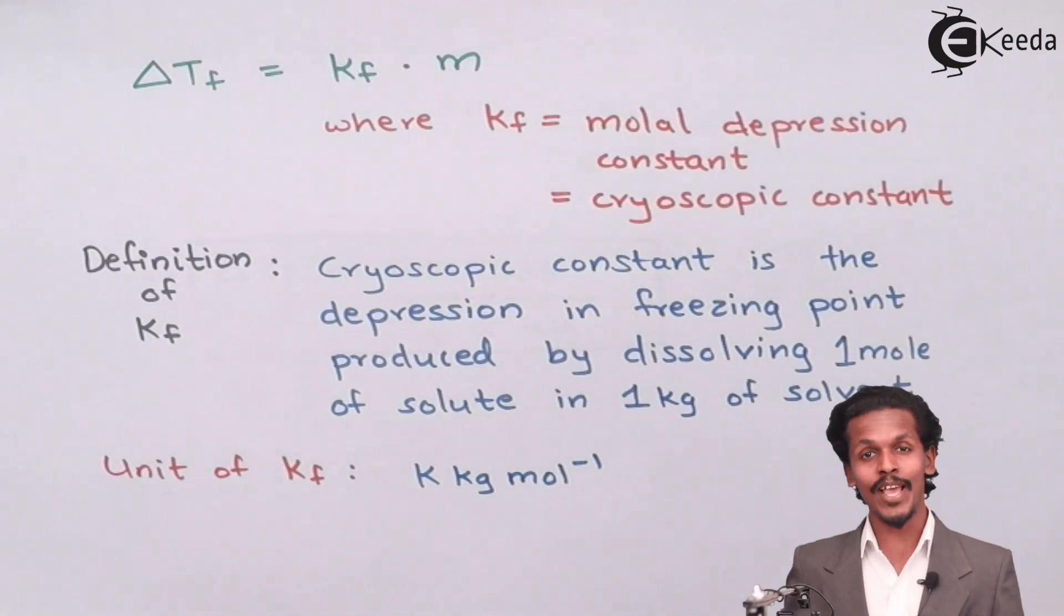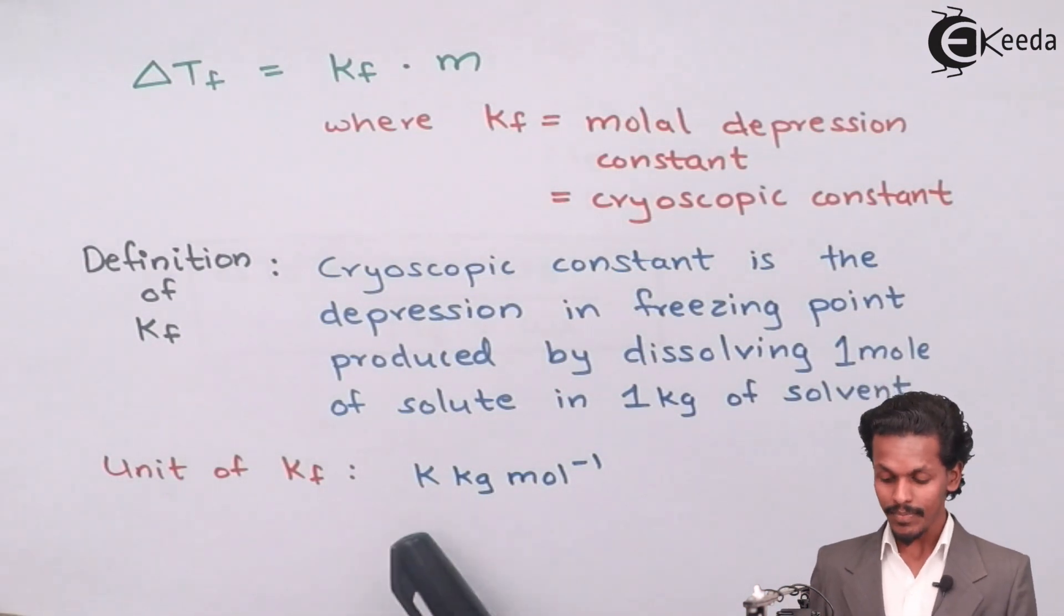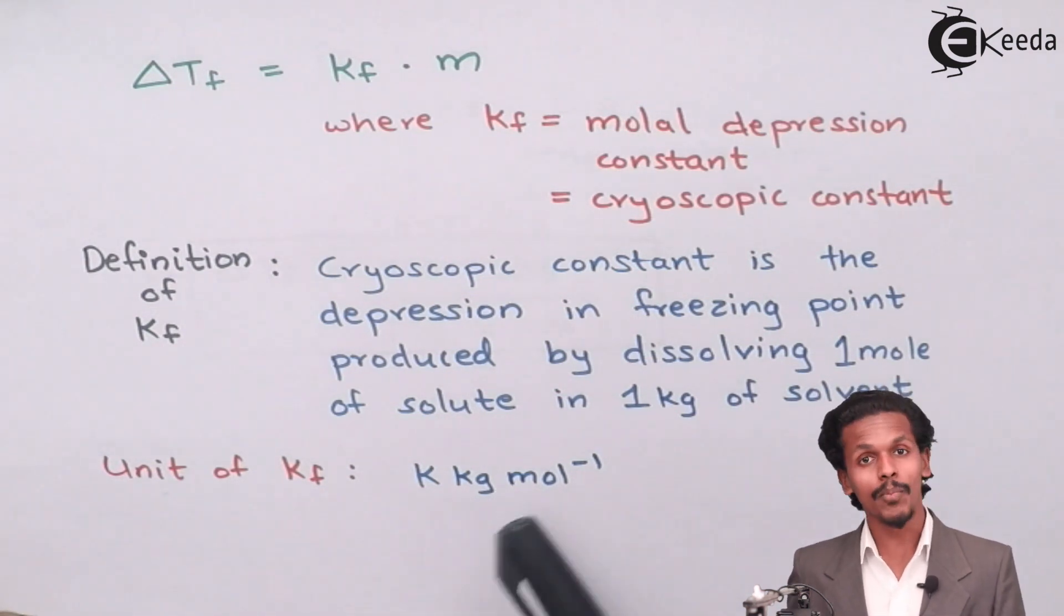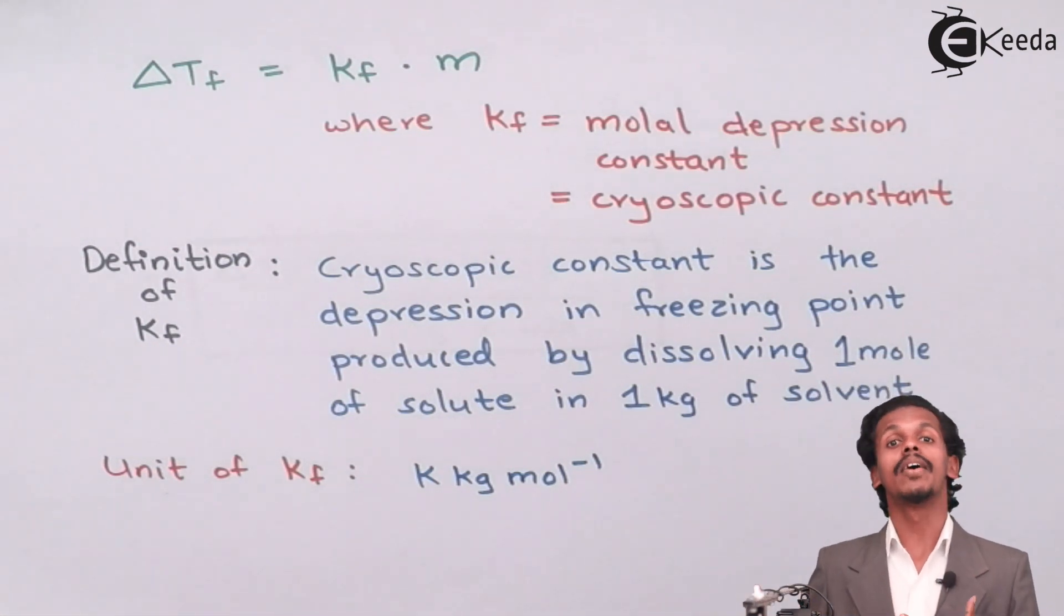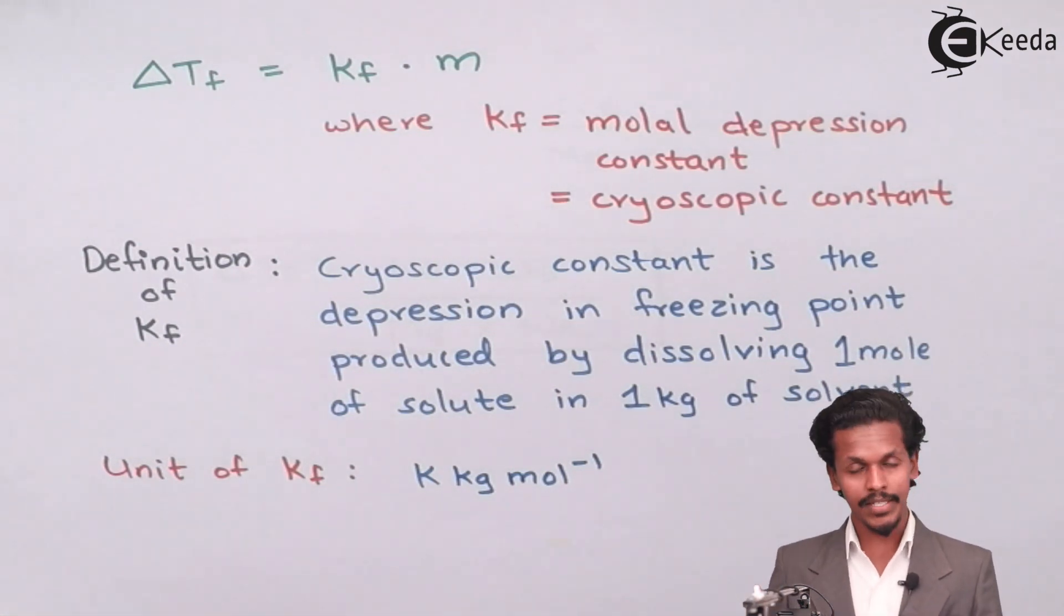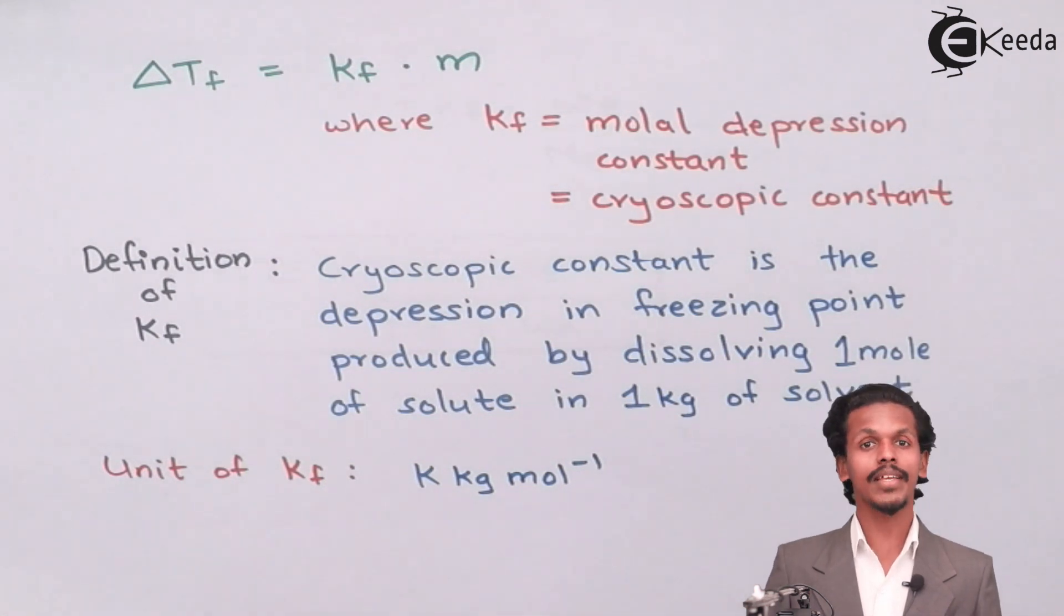And the unit of the cryoscopic constant is Kelvin kg per mol. It's very simple. And based on this thing, we'll find the numerical which will be based on the depression in freezing point in the future.